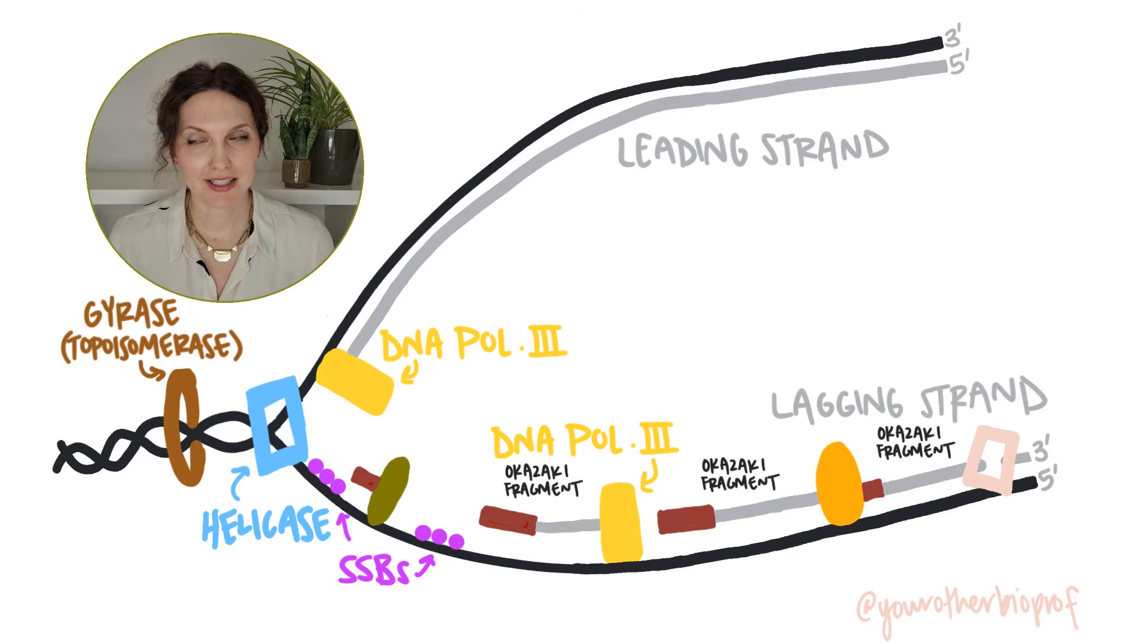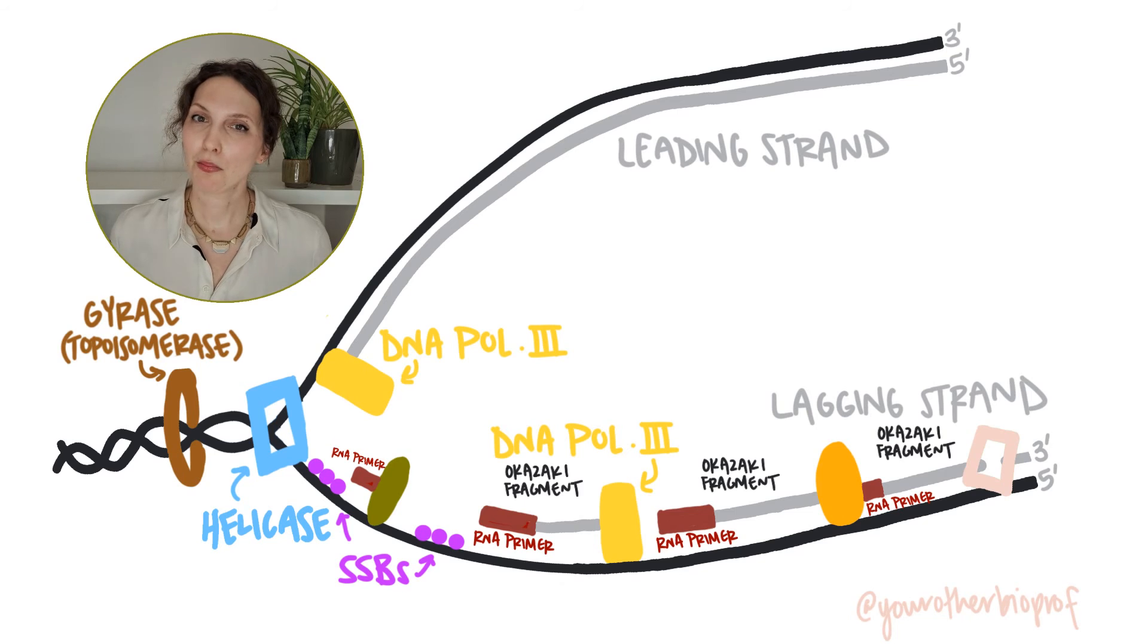One thing about DNA polymerases is that they can't start a strand from scratch. They can only add on to something that's already there. So you'll notice our Okazaki fragments are kicked off, starting with an RNA primer. So kind of weird, right? We actually start making DNA by making RNA. But it works! That RNA primer is made by an enzyme conveniently called primase. So wherever you see a primer that looks like it's still in the process of being made, you're gonna see a primase enzyme there doing its job. Primase enzymes have RNA polymerase activity and they're able to start a new strand from scratch. You'll see that in the process of transcription.